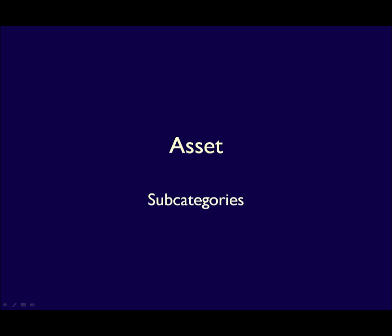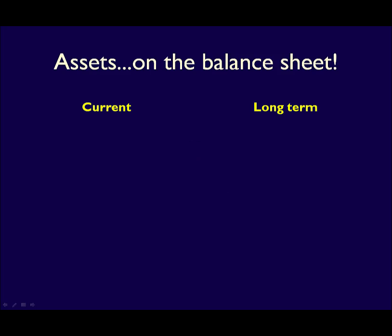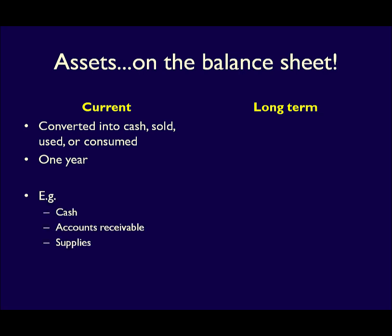On the balance sheet, assets are grouped into categories to communicate useful information to decision makers. By further subdividing assets and liabilities, stakeholders get a better understanding of the business's financial position and health. There are four subcategories for assets: current assets, property plant and equipment, intangible assets, and other assets. Current assets are any asset that will be converted into cash, sold, used, or consumed within one year of the balance sheet date.